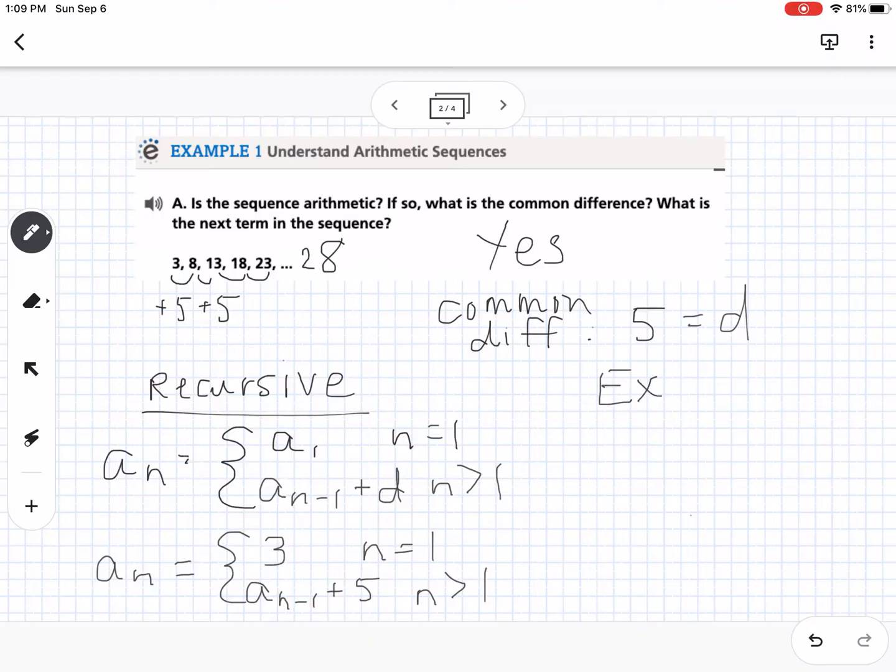The other type is explicit. Explicit is only going to have one line, so it's not a piecewise. It's going to say a_n equals a₁ plus d times (n minus 1). Notice, this n right here is a subscript, but this n right here is just a variable. d is our common difference, n is the term number that we're trying to find.